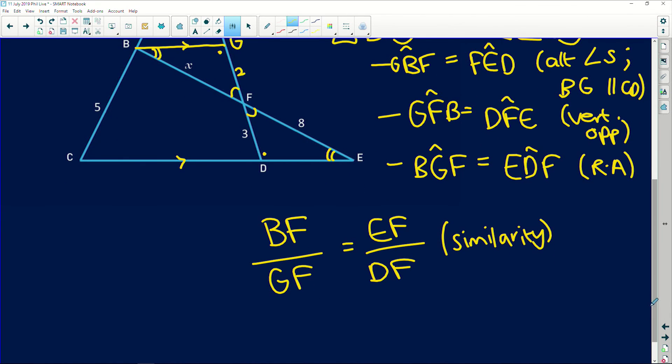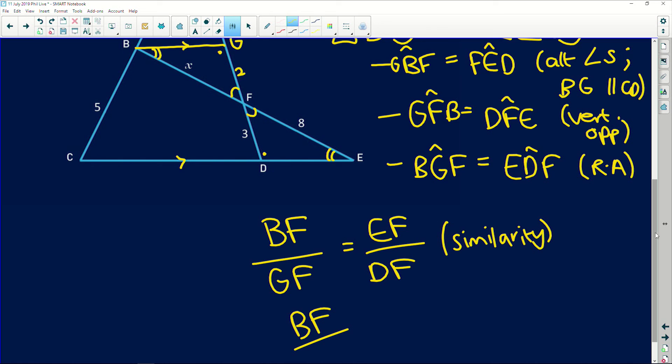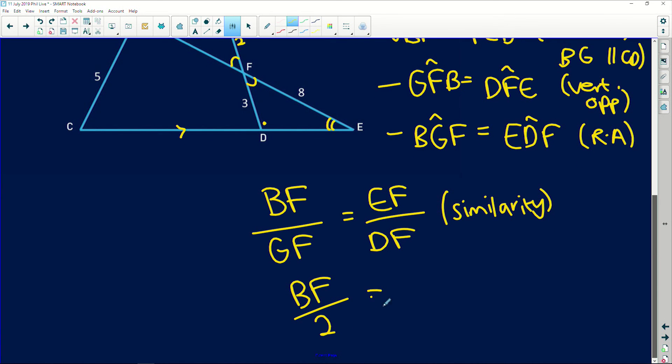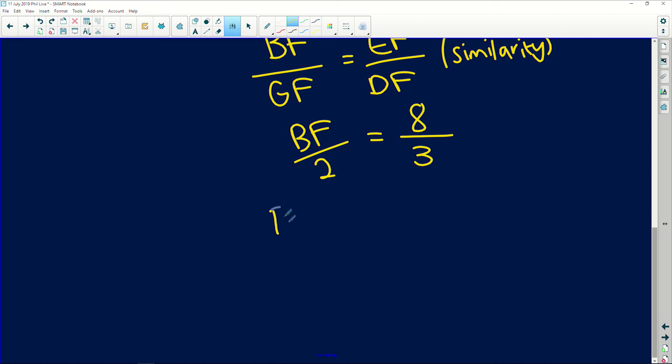So now we can substitute in the numbers. We're trying to find BF over GF. GF we found was 2. It's equal to EF, which is given to us as 8, all over DF, which is given to us as 3, which means that BF is equal to 2 multiplied by 8, all over 3, which equals 16 over 3. You could make it a mixed fraction, which means it would be 5 and a third.